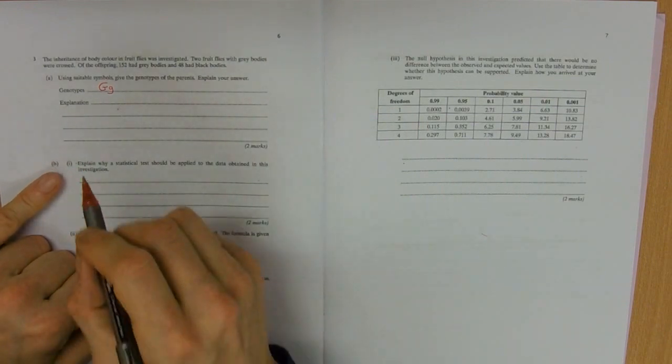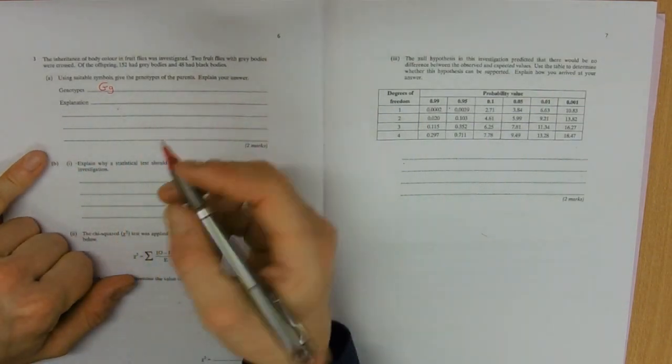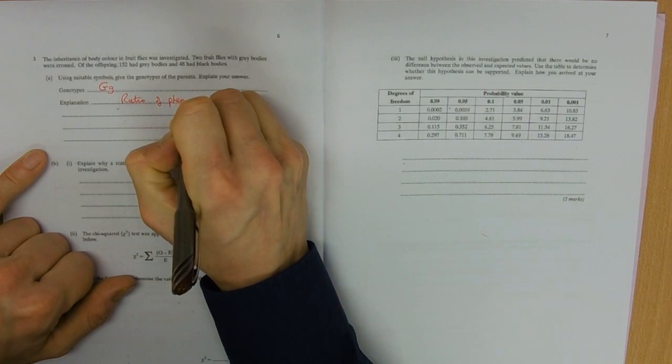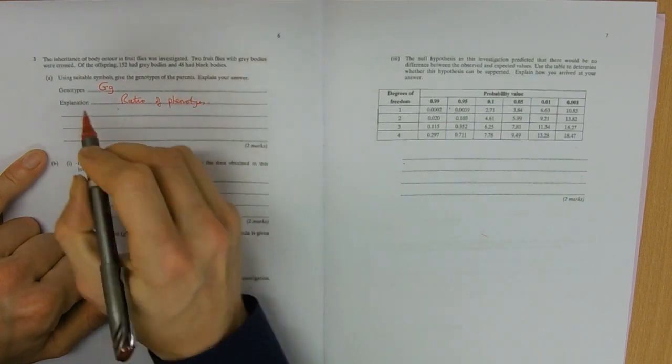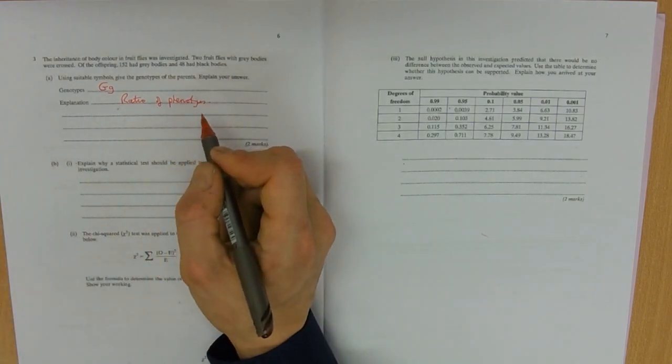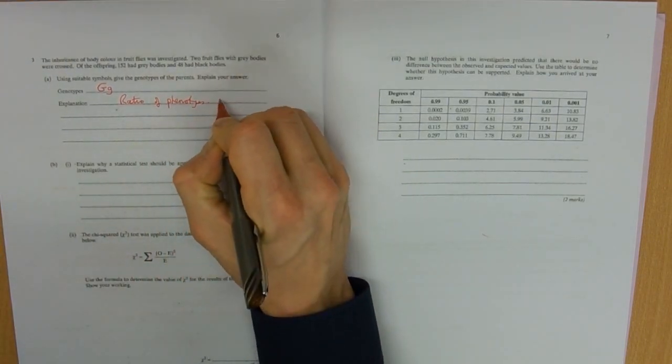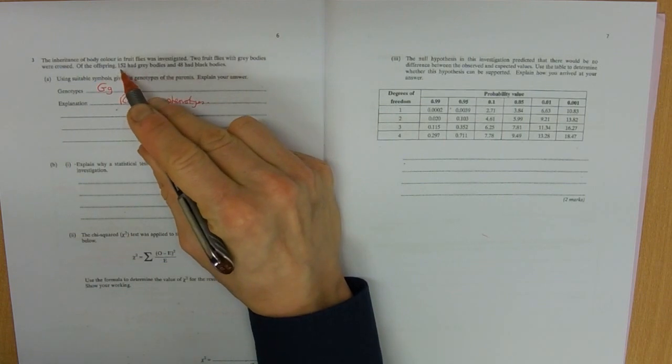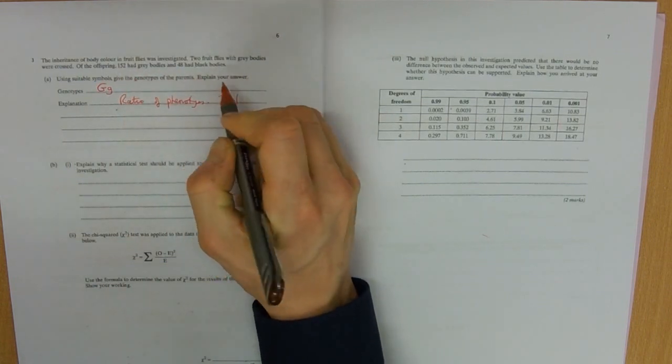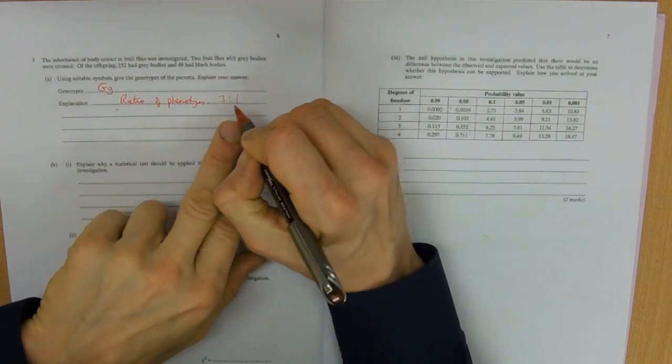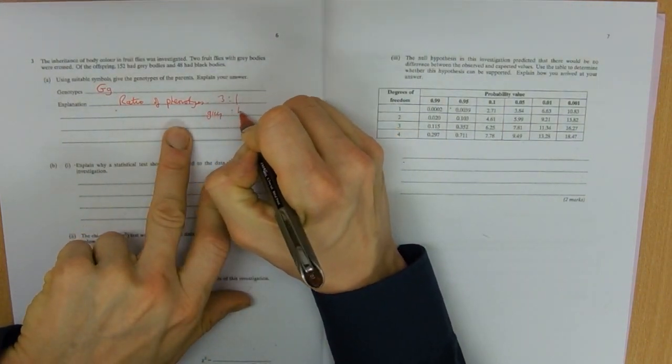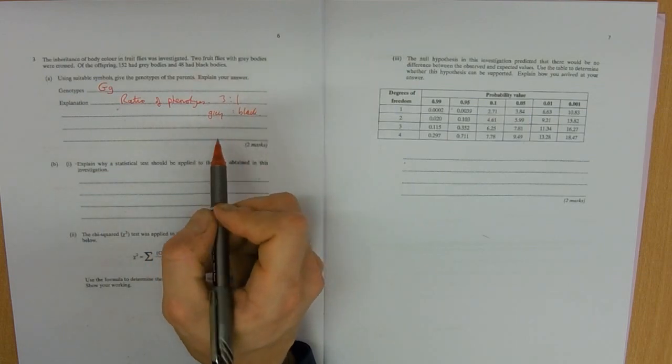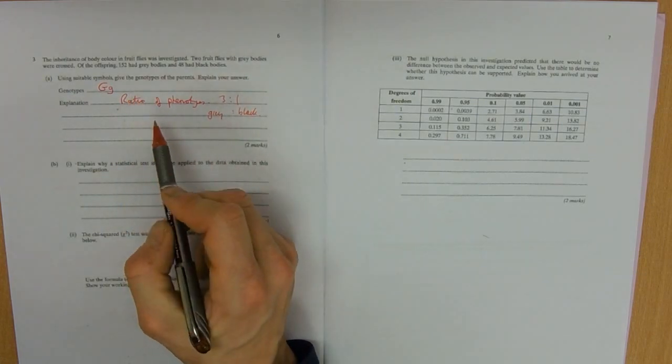Our explanation there is that there's a ratio of phenotypes. So that's our genotypes, what genes are there. Phenotypes, what does it look like. The ratio of phenotypes, that's about three to one. 150 to 50, three to one grey to black. That's telling us that they were heterozygous and they must have had an allele for black body in there.